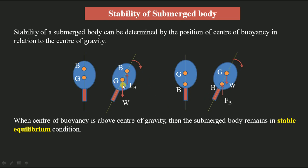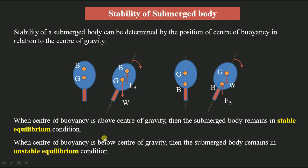Here the couple causes rotation in clockwise direction, and we also tilted the body in the clockwise direction. Since both the tilt and the couple act in the same direction, it causes continuous rotation and overturning of the body. The body cannot return to its original position. Therefore, when the center of buoyancy is below the center of gravity, the submerged body remains in unstable equilibrium condition.